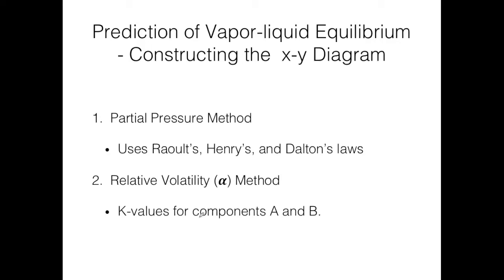This video is about the prediction of vapor-liquid equilibrium by constructing the xy diagram. We can predict vapor-liquid equilibrium using two methods. The first is the partial pressure method which combines Raoult's, Henry's, and Dalton's laws. The second method uses the alpha constant, or the relative volatility method.